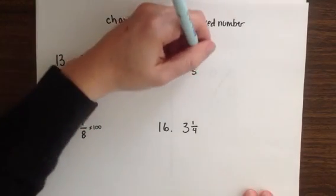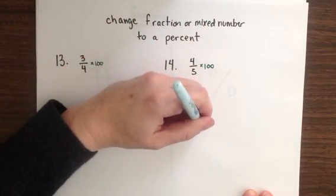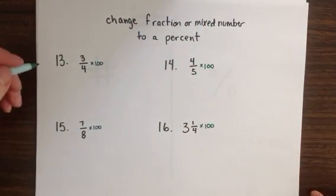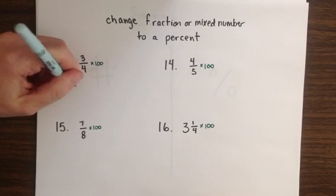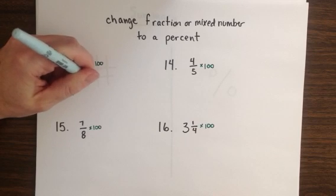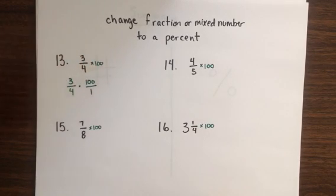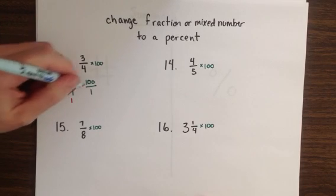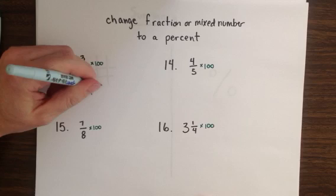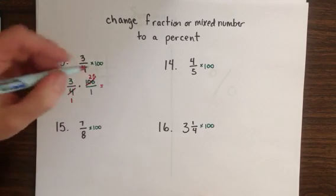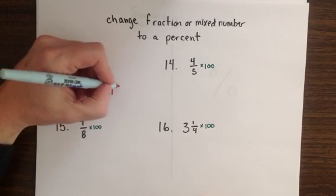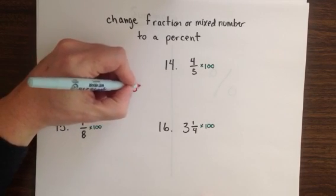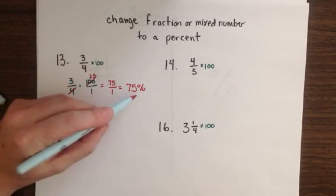Now the steps needed to do that multiplication has us thinking back to our fraction chapter, chapters 2 and 3. To multiply 3 fourths times 100, I'm going to put the 100 over a 1, then reduce, and then multiply. 3 times 25 is 75. 1 times 1 is 1. We can drop the 1. 3 fourths is the same as 75%.